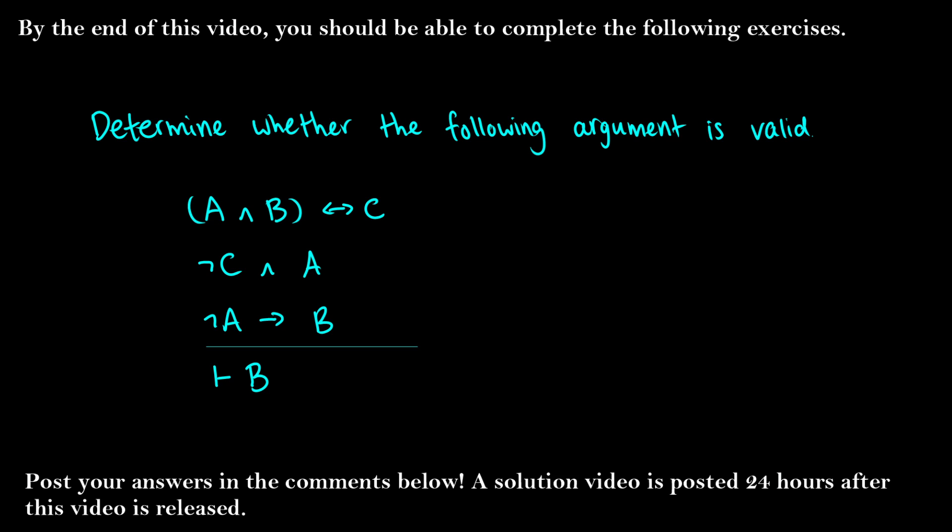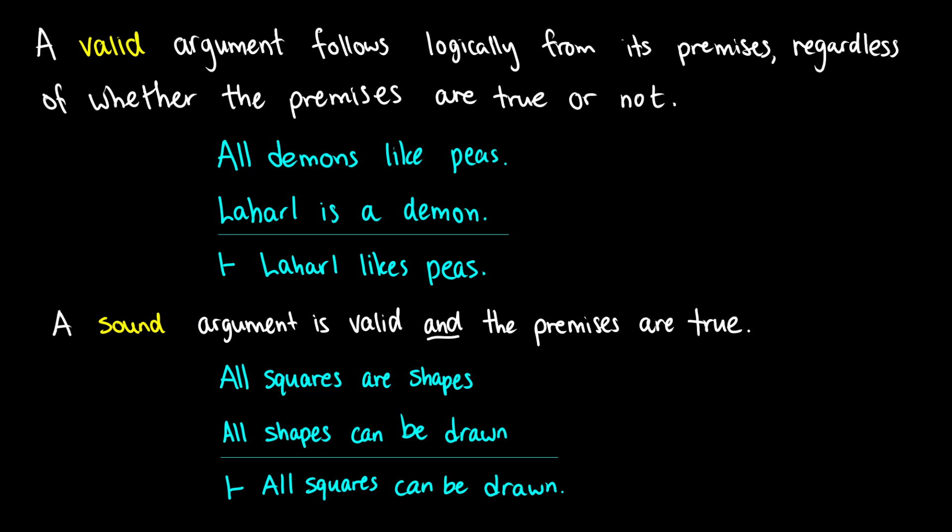In this video, we're going to introduce validity. By the end of this video, you should be able to determine whether the following argument is valid using a truth table. The solution video will be posted 24 hours after this video goes up.